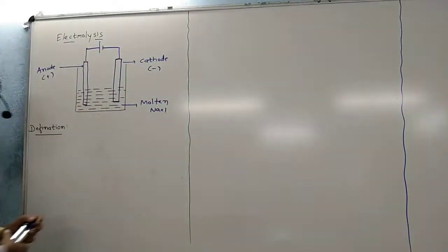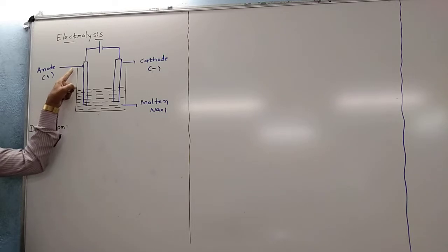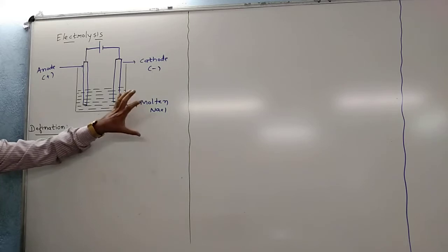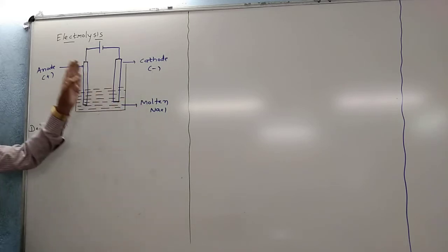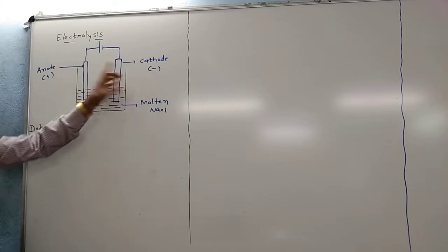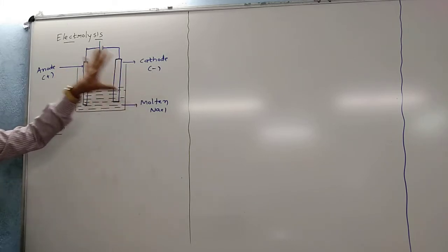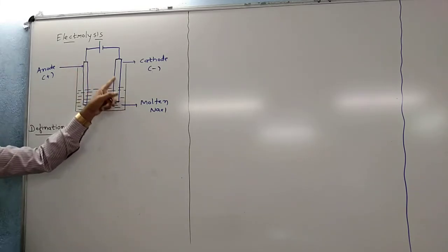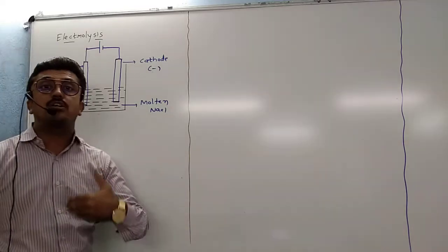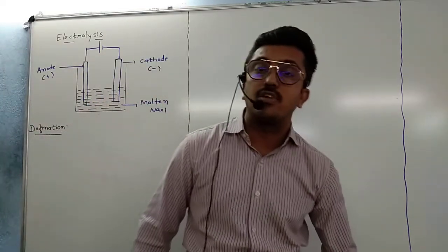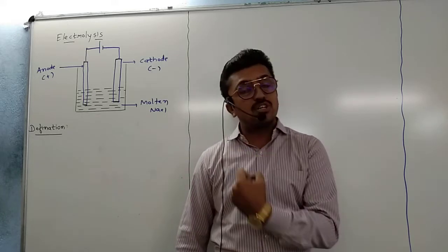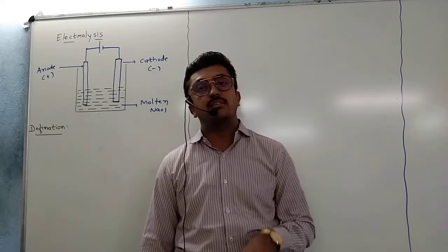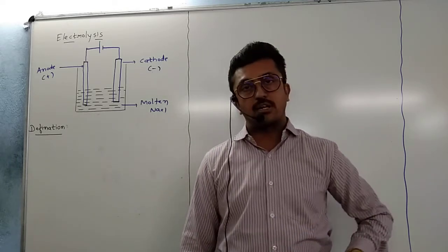Just see in this figure — we are taking here one important beaker, and in this beaker a molten NaCl solution is filled. Anode and cathode are both electrodes of this electrolysis process. We will connect both electrodes with a battery because we will pass current through them. The principle of electrolysis is that electrical energy is converted into chemical energy, while in the electrochemical process, chemical energy is converted into electrical energy.